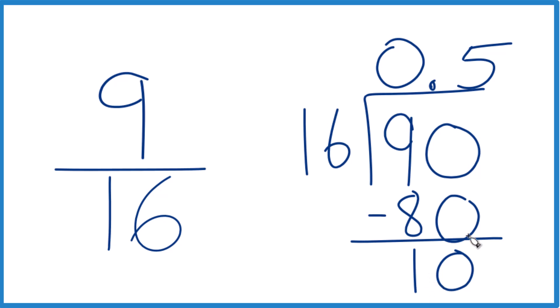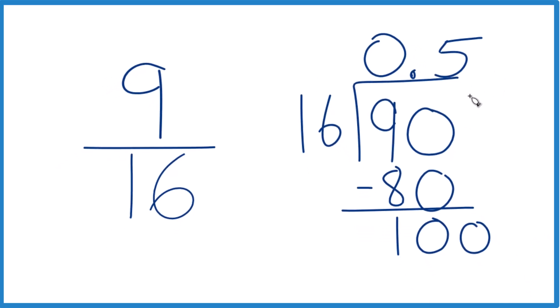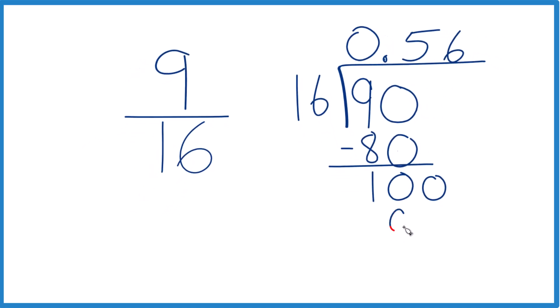And you can see 16 doesn't go into 10, but we could call it 100 if we're going to move over 1 here. So if 5 times 16 is 80, 6 times 16 would be 80 plus 16, so 96. So 6 times 16 is 96. We subtract, and we get 4.